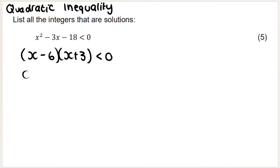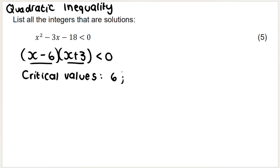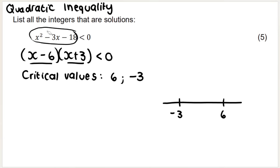After factorizing, my critical values — and always write them out because you still get a mark even if you mess up the final answer — are x equals 6 and x equals negative 3. Most teachers show you how to plot these on a parabola. So we plot negative 3 and 6 on a parabola sketch.